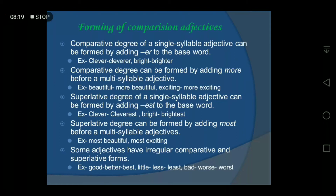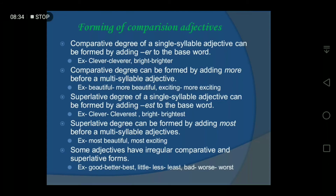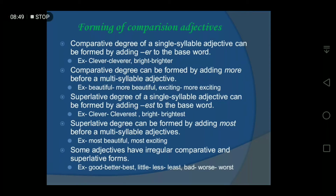So to summarize: if a word has a single syllable, add '-er' for comparative; if it is multi-syllable, add 'more'. For the superlative degree, if the adjective has a single syllable, add '-est'; if it is multi-syllable, add 'most' instead of 'more'. So: single syllable comparative = '-er', superlative = '-est'; multi-syllable comparative = 'more', superlative = 'most'.